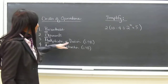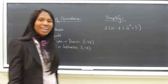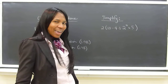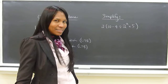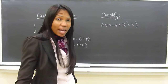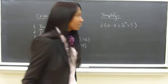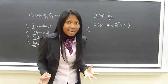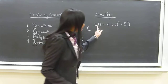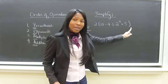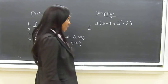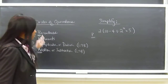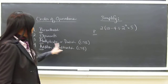Please Excuse My Dear Aunt Sally. Right here is an expression in mathematics. Let's see how we simplify it using the order of operations. First, what we want to do is simplify everything inside the parentheses first — every single element within the parentheses. Within the parentheses, we must follow this order of operations: Please Excuse My Dear Aunt Sally.